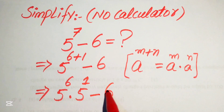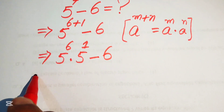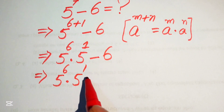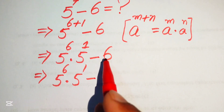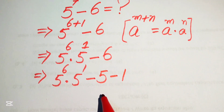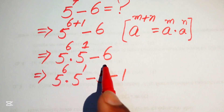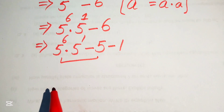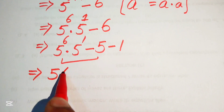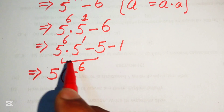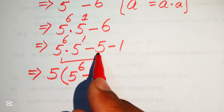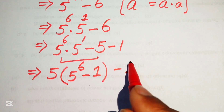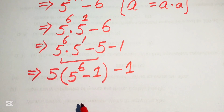In the next step, we rewrite the expression. We have 5 to the power of 6 multiplied by 5 to the power of 1, and we rewrite minus 6 as minus 5 minus 1, since minus 5 minus 1 equals minus 6. In the first two terms, 5 is the common factor, so we take out 5 as the common term. The remaining terms give us 5 times (5 to the power of 6 minus 1) minus 1.